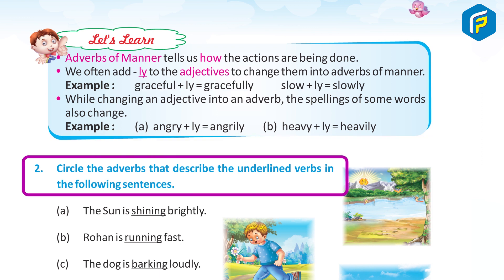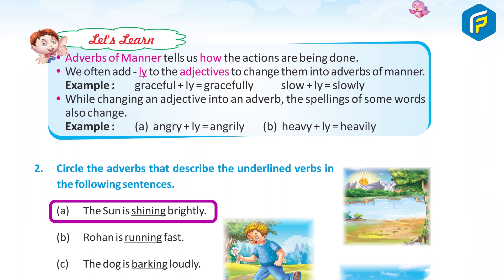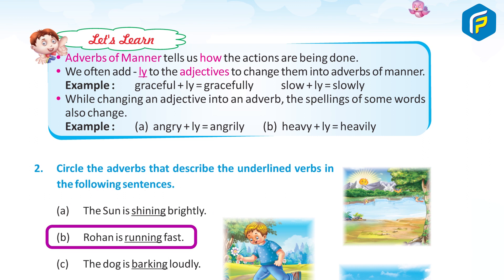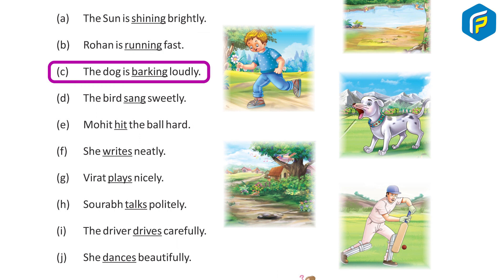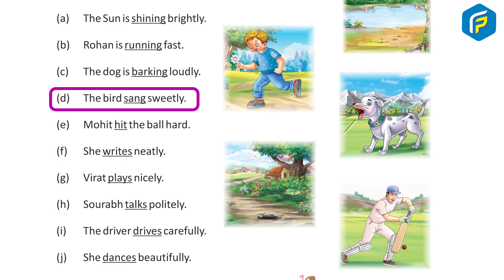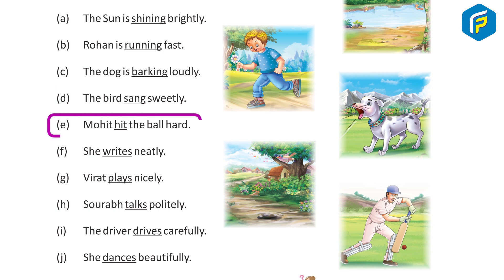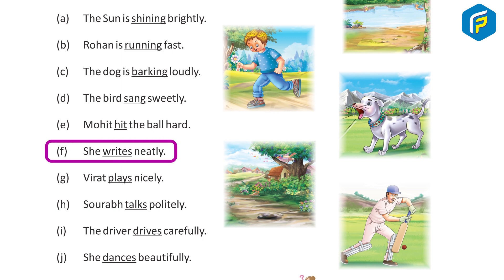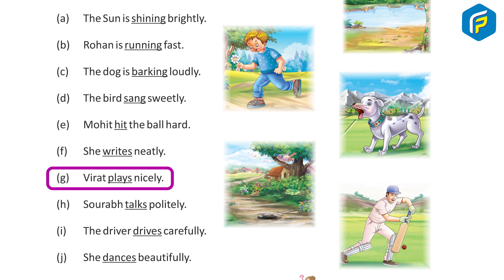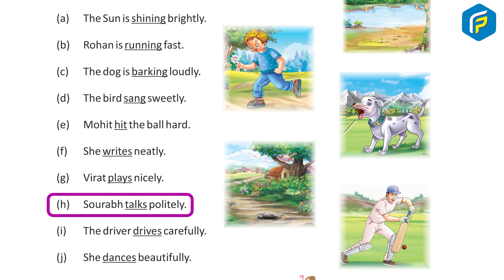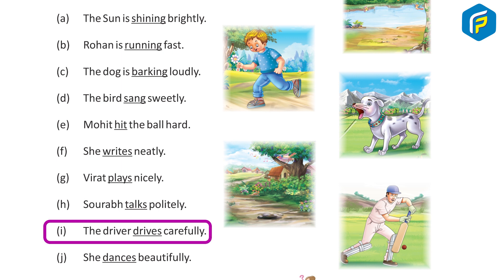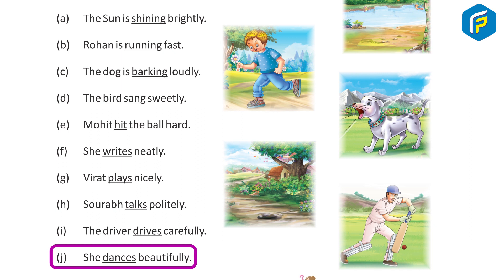2. Circle the adverbs that describe the underlined verbs in the following sentences. A. The sun is shining brightly — Brightly. B. Rohan is running fast — Fast. C. The dog is barking loudly — Loudly. D. The bird sang sweetly — Sweetly. E. Mohit hit the ball hard — Hard. F. She rides neatly — Neatly. G. Virat plays nicely — Nicely. H. Saurabh talks politely — Politely. I. The driver drives carefully — Carefully. J. She dances beautifully — Beautifully.